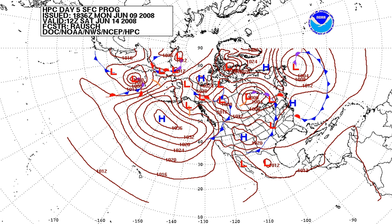Atmospheric pressure is caused by the gravitational attraction of the planet on the atmospheric gases above the surface, and is a function of the mass of the planet, the radius of the surface, and the amount and composition of the gases and their vertical distribution in the atmosphere. It is modified by the planetary rotation and local effects such as wind velocity, density variations due to temperature, and variations in composition.